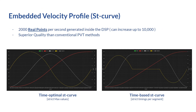In velocity profiling, we have the same types of ST curves: time-optimal ST curves with strict max values for the whole profile, and time-based ST curves with strict timings for each segment. Same as position profiling, in speed profiling we have 2,000 real points per second generated locally in the DSP, providing the same superior quality compared to conventional methods because there is no interpolation involved.